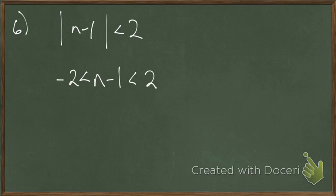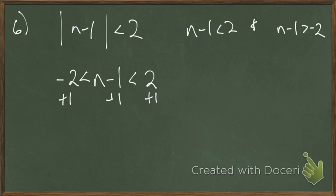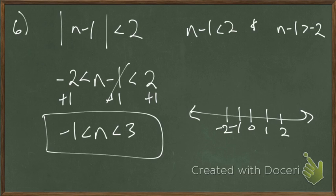You can see why it needs to be greater than negative 2 — a possible answer like negative 1 falls in that range. I wrote this as a compound inequality to show you: n minus 1 less than 2 and n minus 1 greater than negative 2 are the same thing. Here's why I like writing it this way — when I solve for n, I can solve both at once.